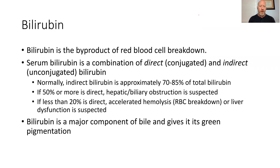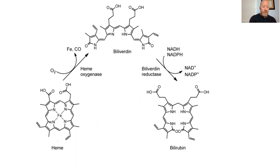Bilirubin, as you probably know, is a byproduct of red blood cell breakdown. When red blood cells reach the end of their life, they go into the spleen. The liver can do it as well, but macrophages will tend to gobble up these old, decrepit red blood cells and break down everything on the inside. Hemoglobin is a component of this. Hemoglobin gets broken down into heme and globin. Globin gets broken down into amino acids. And then heme eventually turns into bilirubin. Here you can see heme as a byproduct of red blood cell breakdown via the enzyme heme oxygenase — remember that, because that's going to be important.